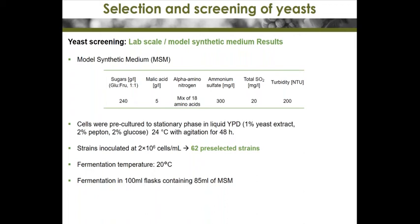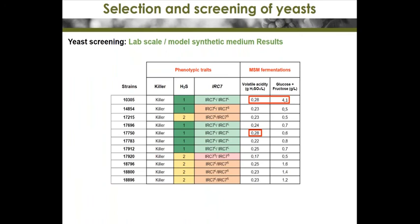In total, 63 different strains were used, including the preselected strains. One pre-culture was carried out in 15 mL of YPD major culture medium, left for two days at 24°C with moderate agitation. Fermentations were carried out using 85 mL total volume, with an inoculum of about 2 million colony-forming units per milliliter.